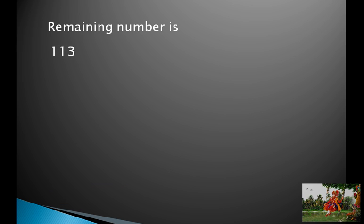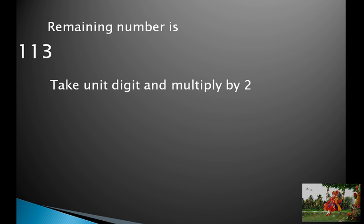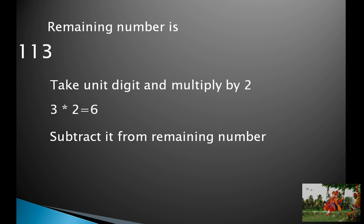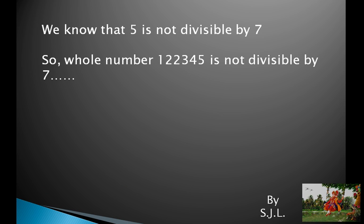The remaining number is 113. The unit digit is 3. Take it, multiply it by 2, and subtract from the remaining number. We get 5, and we know that 5 is not divisible by 7. So the whole number is not divisible by 7.